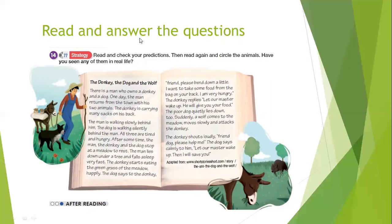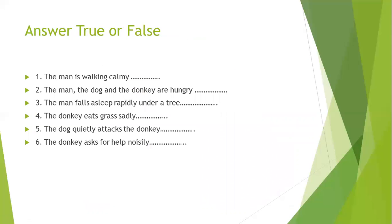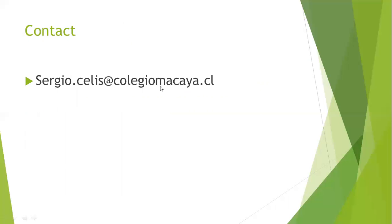You must answer the questions. The activity is: answer true or false — responde verdadero o falso. You have six sentences that you must say whether are true or false. You can write them in your notebook. Once you have answered all six sentences, you can send them to my email and we will see how you did, if there are any corrections. That's all for this week. See you soon. Goodbye!